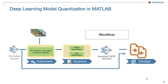The quantization workflow leverages instrumentation based on a calibration data store to compute the instrumentation statistics that are used to quantize the weights, biases, and activations of the layers of the network. Finally, the validation step computes accuracy metrics to analyze and understand the impact of quantization on the accuracy of the network.